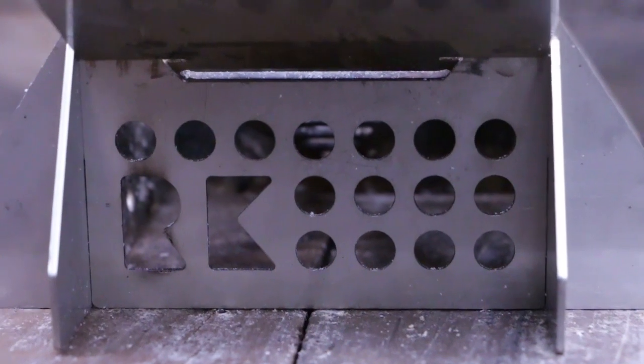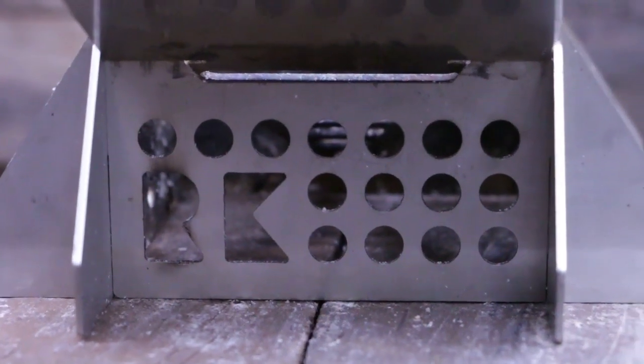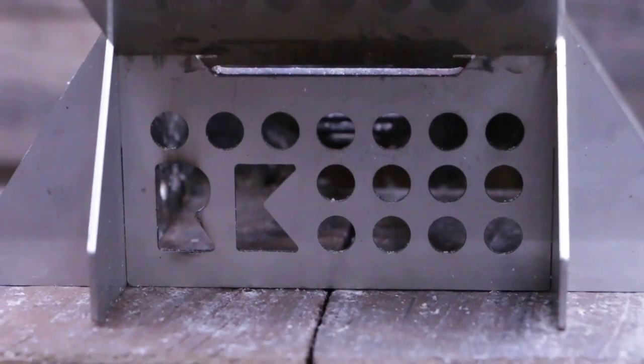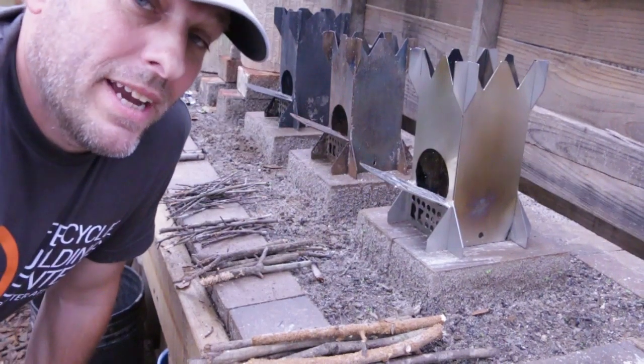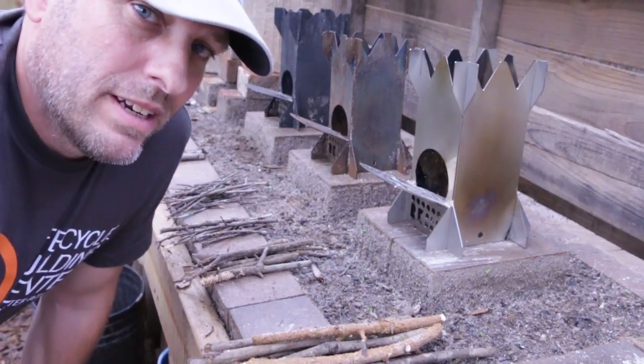that's what the cutouts are for on the front. Not only is it going to give that side of the stove a little more air, which will help with vortexing, but it also allows you to get a match through or a lighter through without blowing it out.